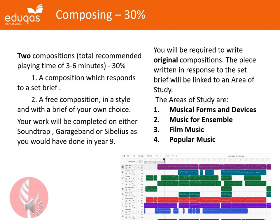Component 2 - Composing. You will be composing two compositions. Composition one responds to a set brief set by the exam board. Currently, our Year 11s are responding to either the film music brief, where a secret agent escapes a dangerous situation, or the popular music brief, where they are writing a piece for a youth environmental festival.